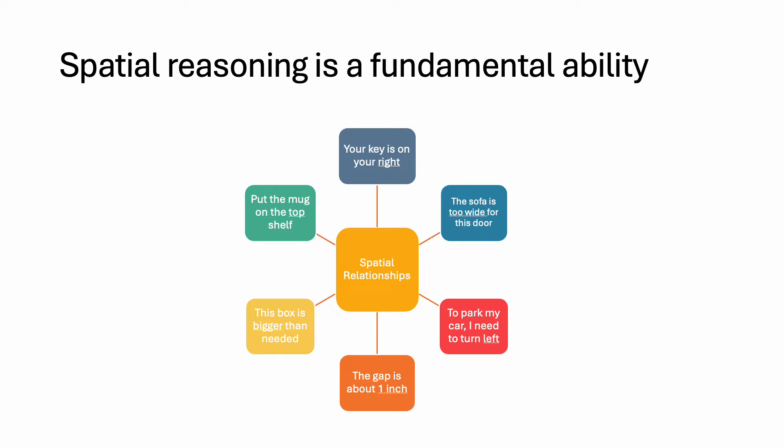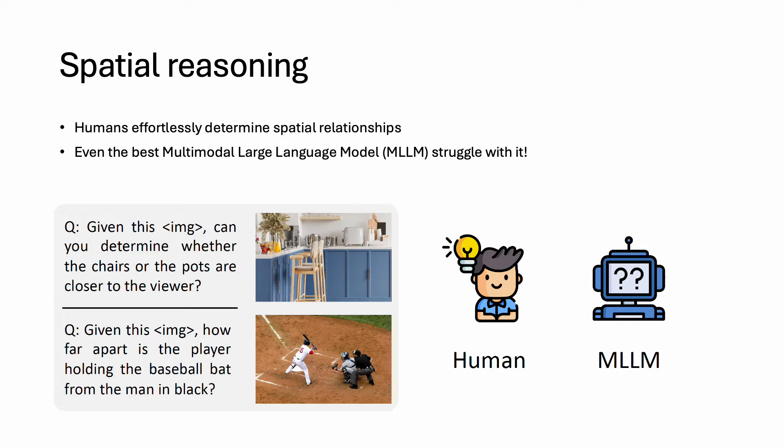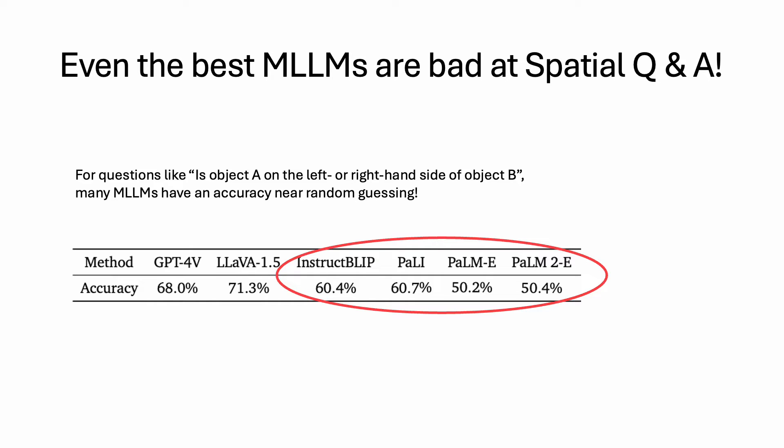Spatial reasoning is a fundamental ability in our daily life. From telling how big is the gap to driving, we do spatial reasoning all the time. While humans effortlessly determine spatial relationships between objects, even the best multimodal large-language models struggle with it. If we ask a multimodal large-language model whether object A is on the left or right-hand side of object B, even the best models struggle with a success rate of only nearly 50%, as shown in the table here, implying they are just doing random guessing.